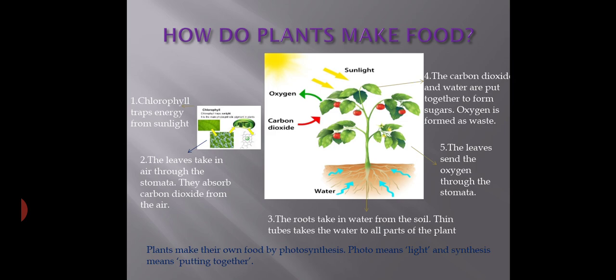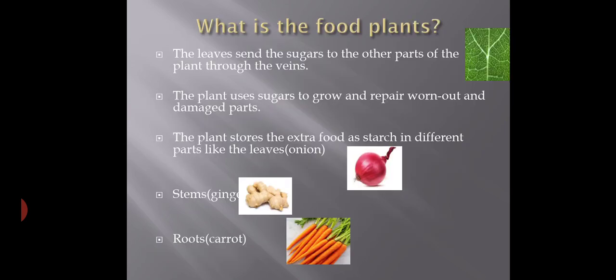The leaves send the sugars to other parts of the plant through the veins, which circulate water molecules and food to every part. The chloroplast is present in the leaves. Plants use sugars to grow and repair damaged parts, and they store extra food as starch in different parts — such as leaves, onion bulbs, ginger stems, fruits, and carrots.